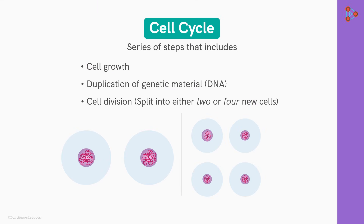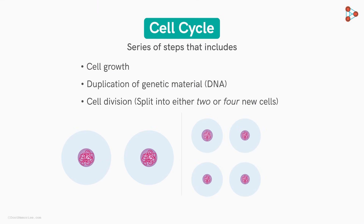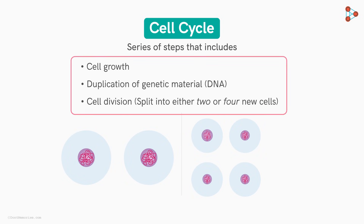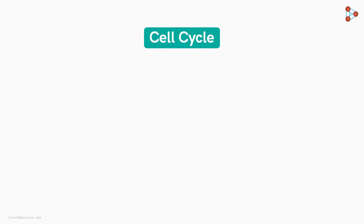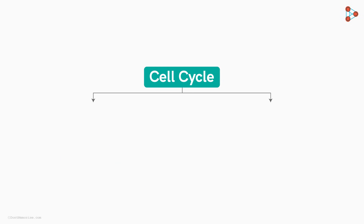Getting back to the cell cycle — as the name suggests, the process occurs in phases or stages, a series of steps that repeat in a cyclic manner. For convenience, we majorly divide a cell cycle into two phases: the first is called the interphase, and the next is the M phase, which represents either the mitotic or meiotic phase.